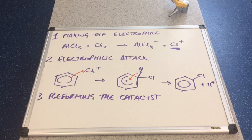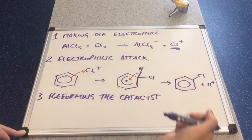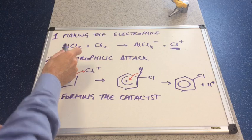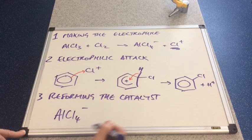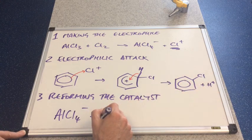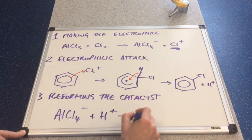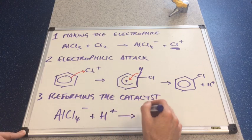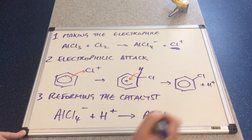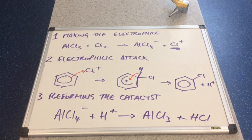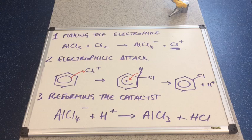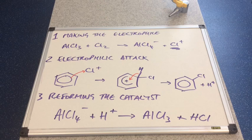Finally, we need to reform the catalyst, otherwise it wouldn't be a catalyst. You can see, hopefully, we need to make this back. We'll take the AlCl4- ion and react it with the H+, and we will produce AlCl3 and HCl. Because the mechanism is pretty much identical to the nitration mechanism, it's obviously got the same name. So this is also electrophilic substitution.